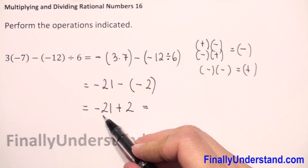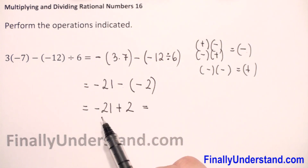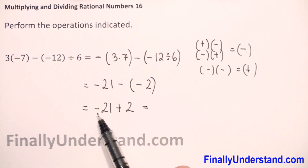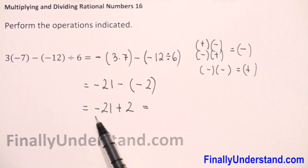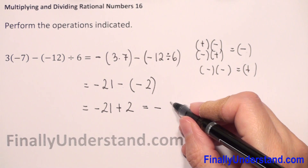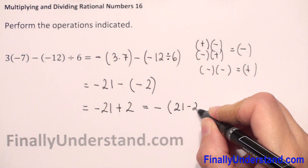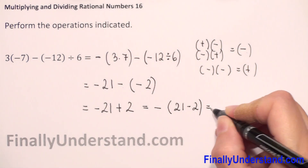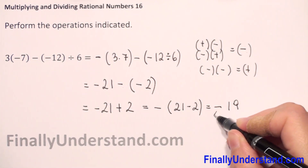Now we have to add a negative number and a positive number. We always check which of the two numbers is greater — forget the negative sign and compare 21 and 2. Since 21 is greater and before 21 we have a negative sign, we write a negative sign. Then we subtract the smaller from the greater: 21 minus 2 is 19, giving us negative 19.